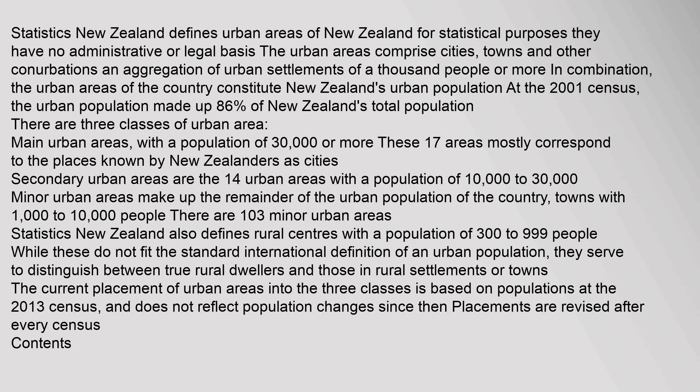Statistics New Zealand defines urban areas of New Zealand for statistical purposes; they have no administrative or legal basis. The urban areas comprise cities, towns and other conurbations — an aggregation of urban settlements of a thousand people or more in combination. The urban areas of the country constitute New Zealand's urban population. At the 2001 census, the urban population made up 86% of New Zealand's total population.